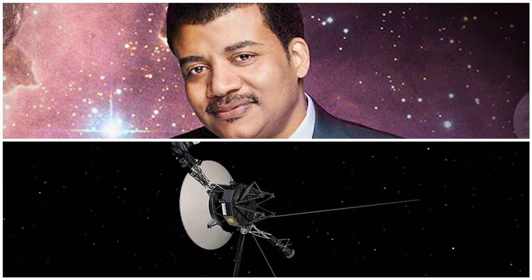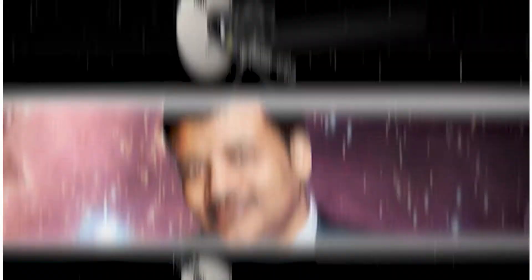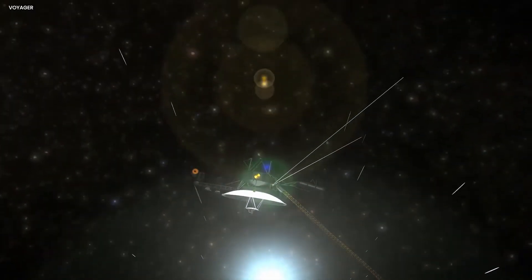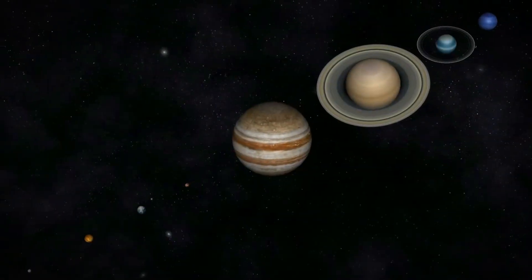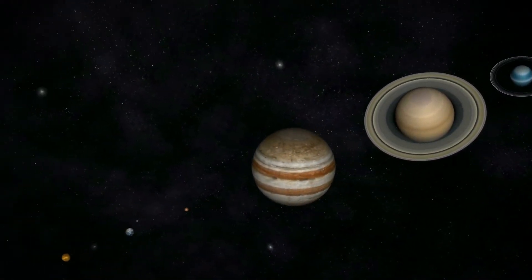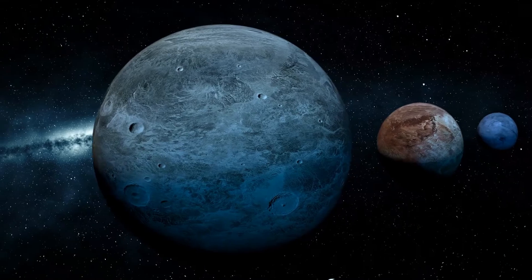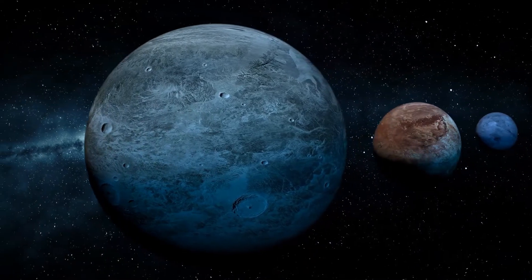Neil deGrasse Tyson just leaked Voyager's terrifying discovery in space. In 2012, Voyager 1 crossed the heliopause, the outer edge of our solar system. Join us as we explore the mystery of the far reaches of our planetary system and find out how dangerous the universe truly is.